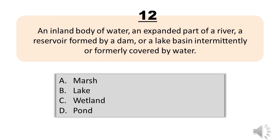Number 12. An inland body of water, an expanded part of a river, a reservoir formed by a dam, or a lake basin intermittently or formerly covered by water. A. Marsh. B. Lake. C. Wetland. D. Pond. The correct answer is Letter B. Lake.